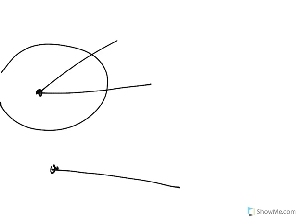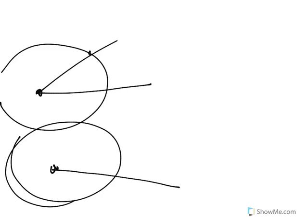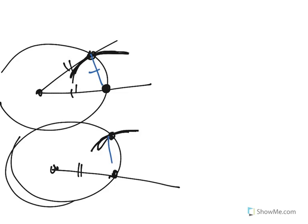Copying an angle: here's an angle, and I want to make a copy of it over here. The first step is to make a circle of any size centered at the vertex, then make that same circle — same radius — over here. Now lift the compass and make another circle with this intersection point as the center, making a little arc through the other intersection point. Lift the compass, come here, and make that same arc. That means this line segment is the same length as this line segment. When I connect the points, we have two isosceles triangles congruent by SSS, so this angle and this angle are congruent.